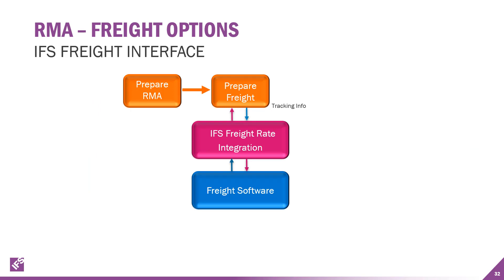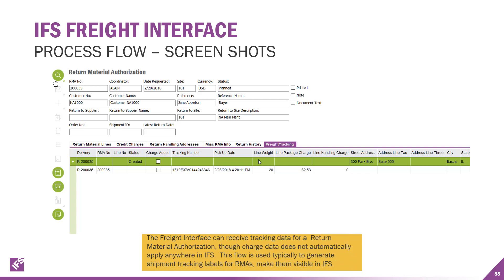Another process flow that can be utilized in the freight interface is the RMA — the return material authorization. If you create an RMA and need to get the tracking info, you can prepare the freight using the freight integration to process the return. Just like on the customer order line, you can receive that tracking data for your RMAs directly into the RMA form on the new freight tracking tab.